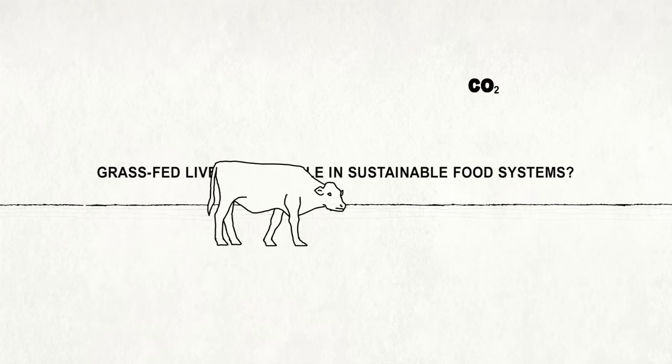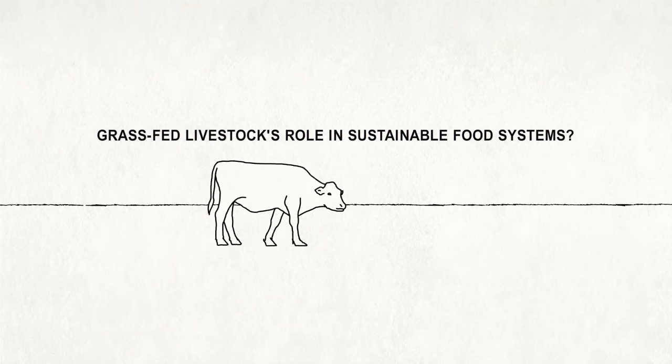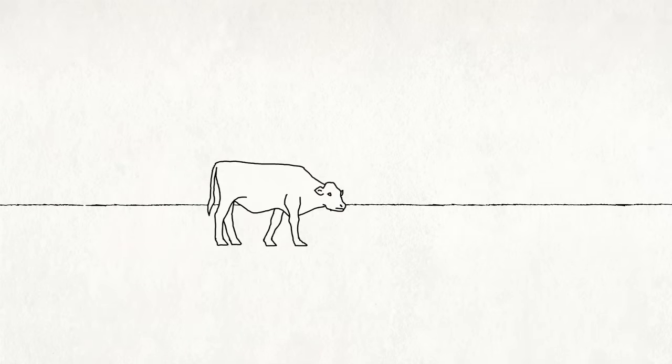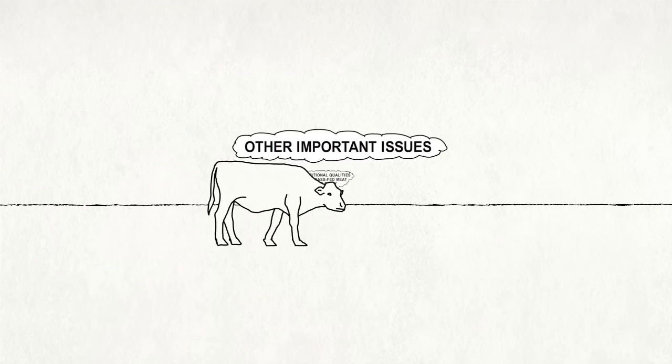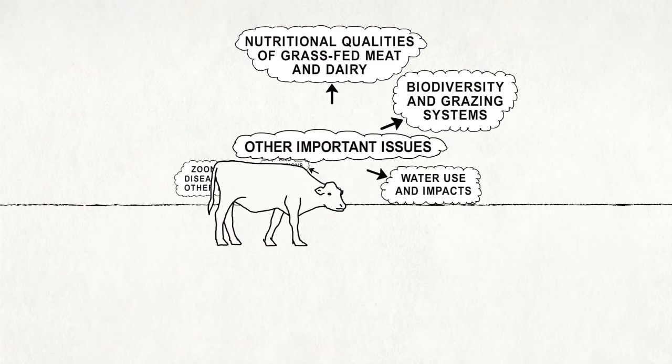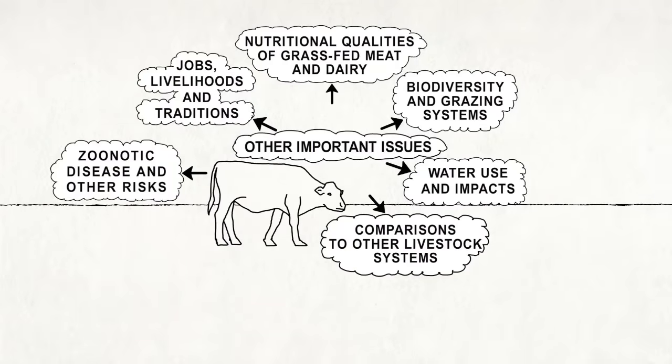And what does this mean for grass-fed livestock's role in sustainable food systems? Answering that question adequately requires a comprehensive sustainability assessment, reaching way beyond climate change issues and undertaking far beyond the scope of this research.